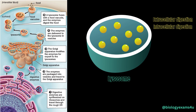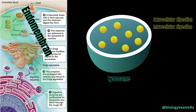Extracellular substances are taken into the cell by endocytosis, pinched off from the plasma membrane and now in the cytoplasm as a food vacuole or as an endosome. This endosome fuses with the lysosome, which degrades the particles inside and releases the contents to the cell for further use, or excretes them out of the cell by exocytosis. This is how lysosomes are involved in the endomembrane system for intracellular and extracellular digestion.